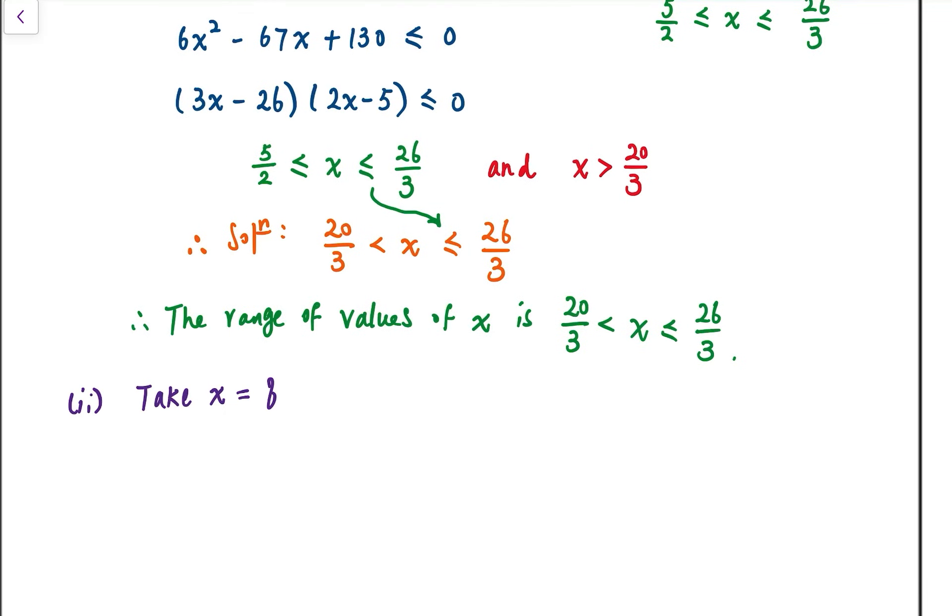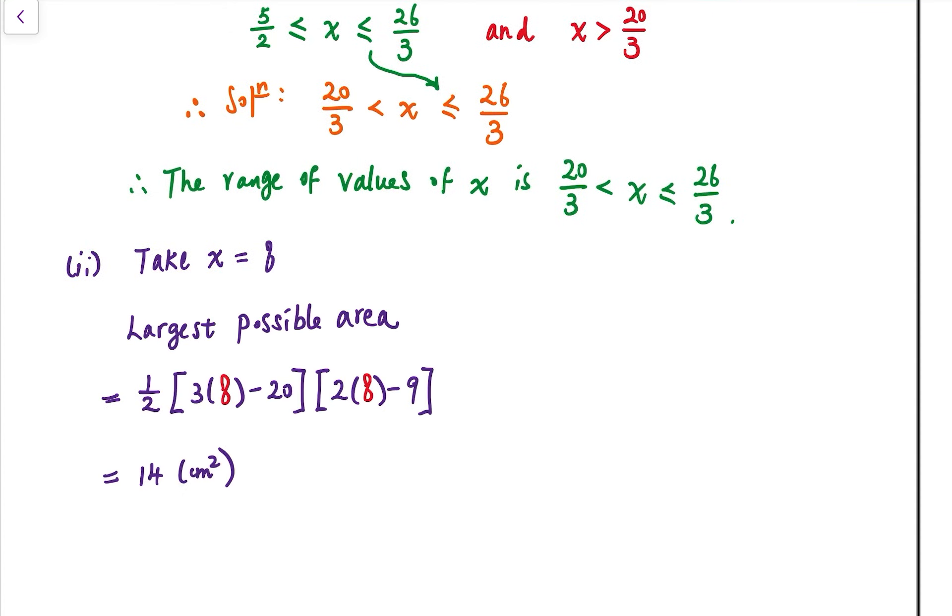x equals 8, then the height would be 2 times 8 minus 9. So the largest possible area would be 1 over 2 times the height,